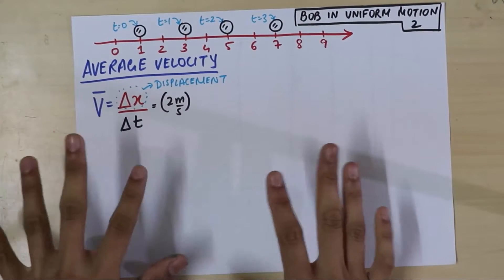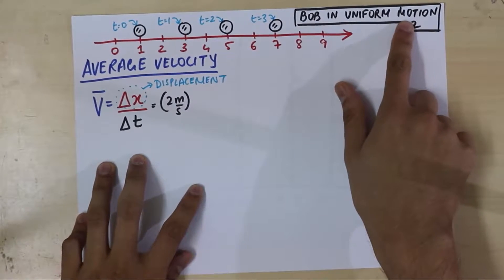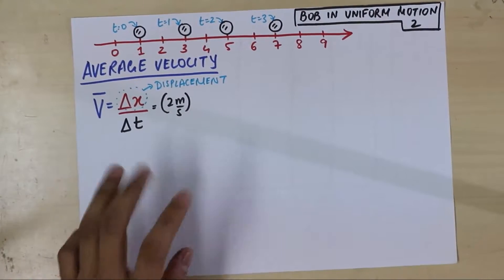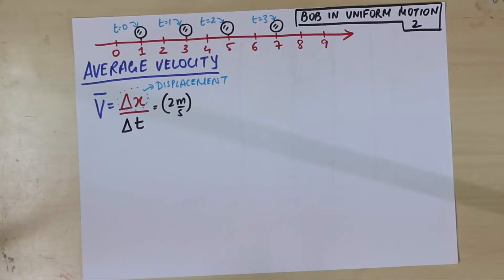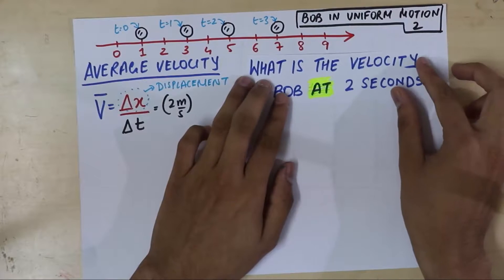Welcome! This is the work we have done so far and we are in Bob in uniform motion part 2. The reason I have a part 2 for this is because last time I told you I am going to ask you a radical question and that question is this: